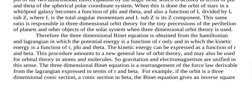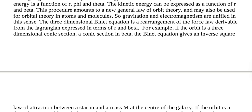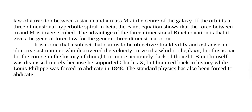The three-dimensional Binet equation is a rearrangement of the force law derivable from the Lagrangian expressed in terms of R and Beta. For example, if the orbit is a three-dimensional conic section — a conic section in Beta — the Binet equation gives an inverse square law of attraction between a star M and a mass M at the centre of the galaxy. If the orbit is a three-dimensional hyperbolic spiral in Beta, the Binet equation shows that the force between M and M is inverse cubed. This gives the general force law for the general three-dimensional orbit.